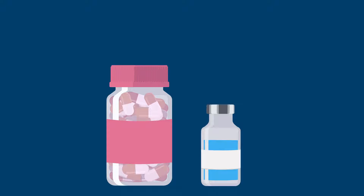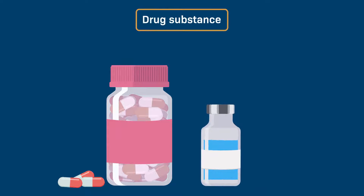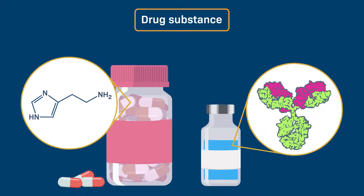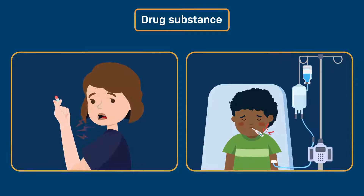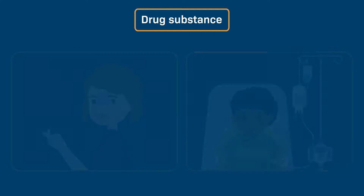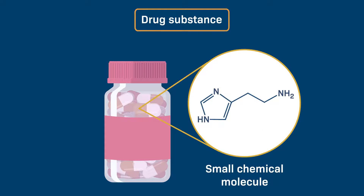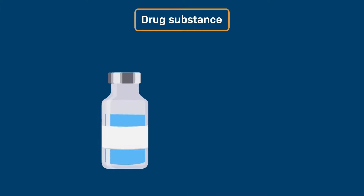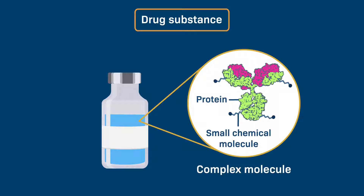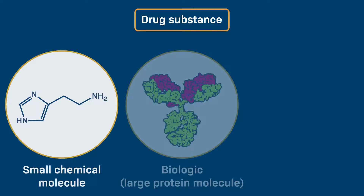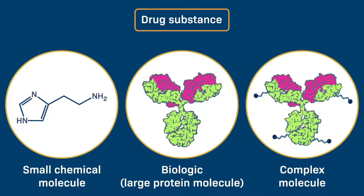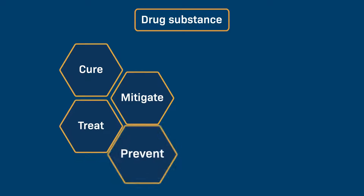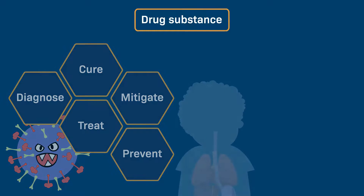A drug substance is an active ingredient of a medicine that causes the desired therapeutic effect. It can be a simple small chemical molecule, a large protein molecule also called a biologic, or a complex molecule containing both of these components. A medicine can contain one or more of these drug substances.